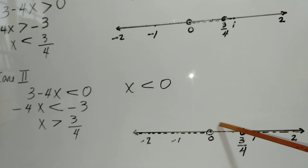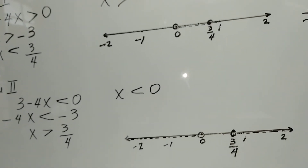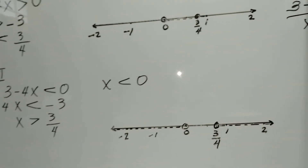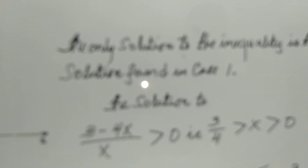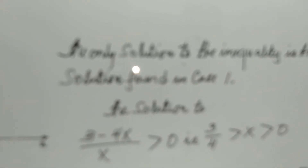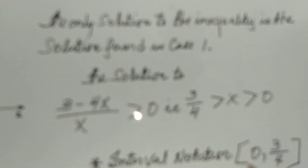So the only solution to this inequality is the solution found in Case 1. The solution to (3 minus 4x) over x is greater than 0 is x is less than 3/4 and greater than 0. In interval notation, the answer is the open interval (0, 3/4), meaning between these two points is our answer.